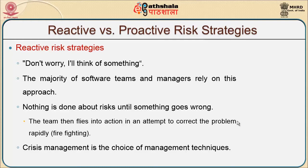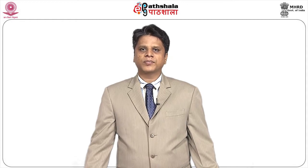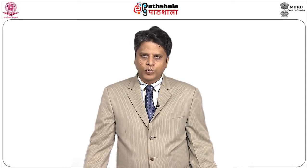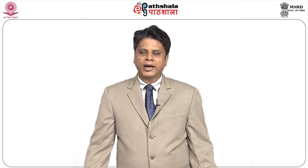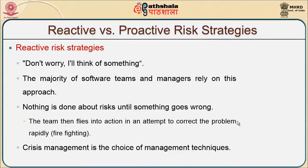We will now differentiate between reactive and proactive risk. Reactive risk strategies are ones which do not worry upfront and think of alternatives in case some risk happened. The system or the people managing the risk will take care of alternatives. The majority of software teams and managers rely specifically on this reactive risk approach — once something has happened, what is the reaction this risk strategy has to provide? Many times, management looks after this kind of control rather than going for a proactive approach.